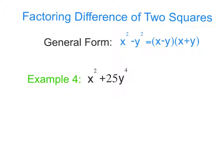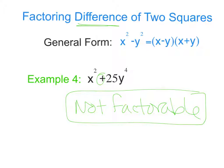Our last example, we have x squared plus 25y to the 4th. And if you remember what we said, when we have a plus, we can't do anything about that with difference of 2 squares. It's not a difference. So we see if we can do a greatest common factor, which we can't. So this is not factorable, and that is our final answer.